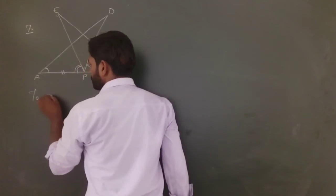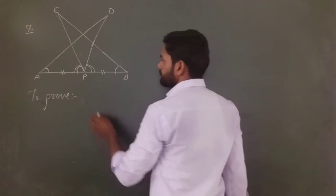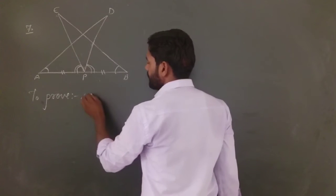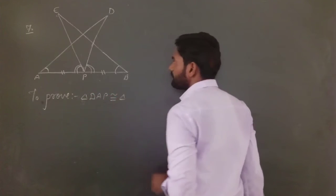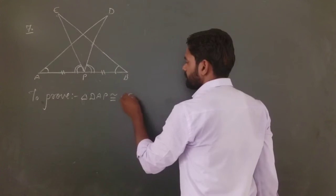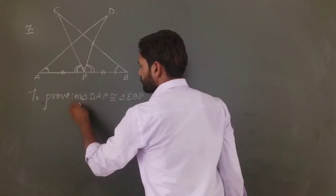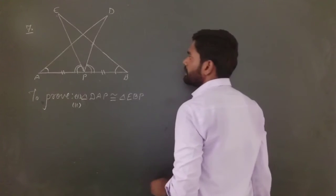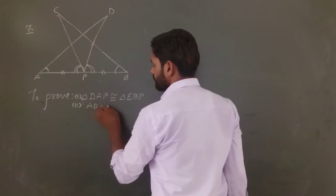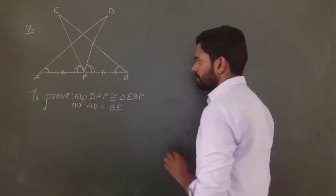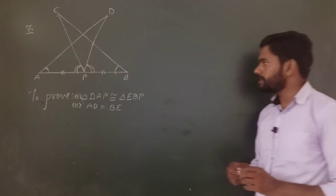To prove: triangle DAP is congruent to triangle EBP. This is the first part we have to prove. And second is AD is equal to BE. So let's proceed.